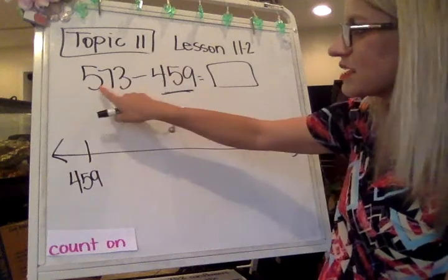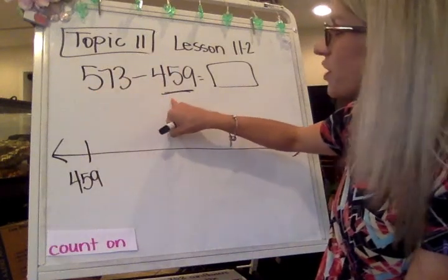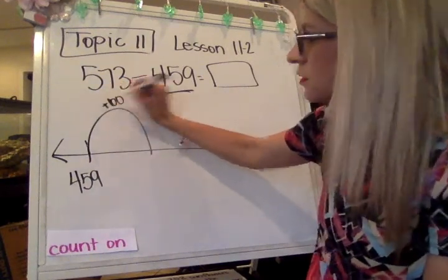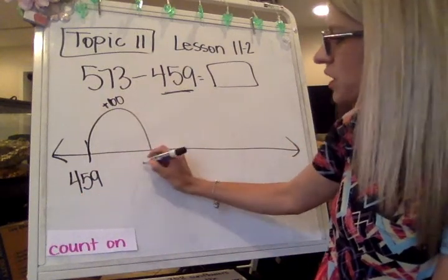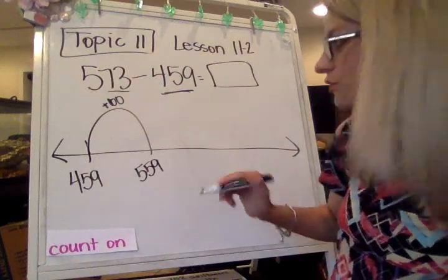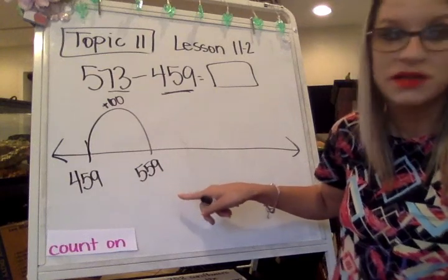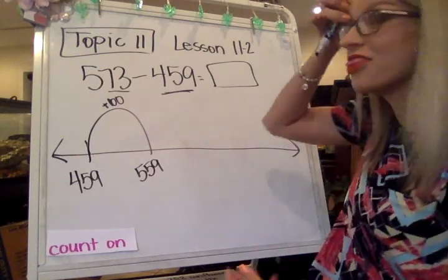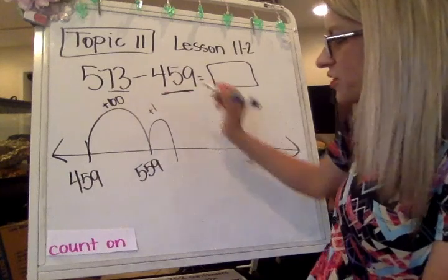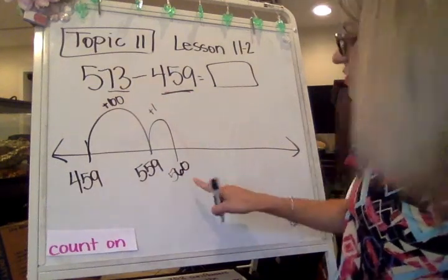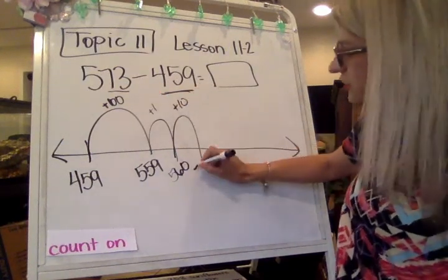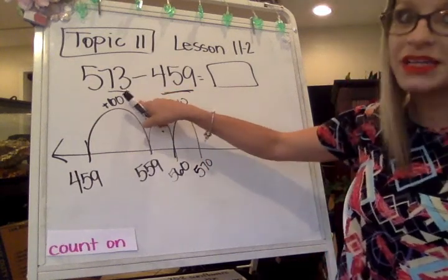So we're going to start with the 459 and we're going to put it over here on the left hand side. And we're going to count up until we get to 573. I'm going to start by adding 100 because I know if I add 100 to this number, 459, it's not going to go over this amount of 573. So 459 plus 100 is 559. Now I'm trying to get to this number right here of 573. I really like to get to the next 10 and then add on from there. So 559, I'm going to just add 1 to get to 560. So 560, I need to get to 570 so I'm going to add another 10. So 570. Now I need to add 3 to get to 573.